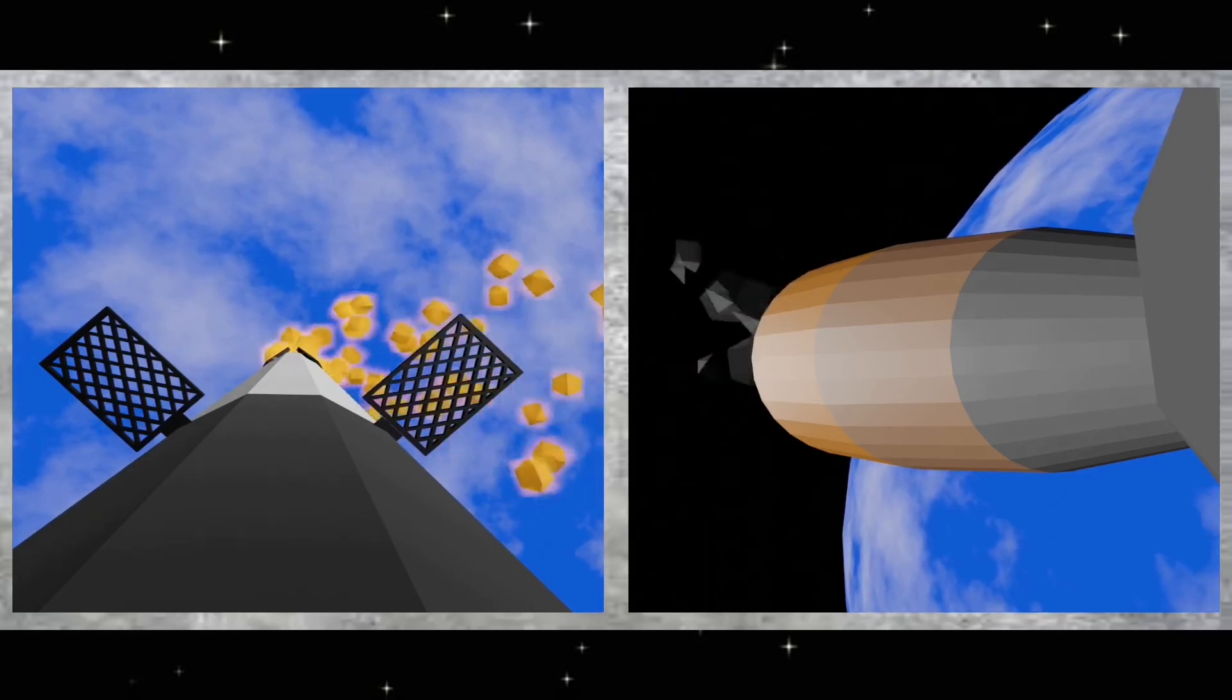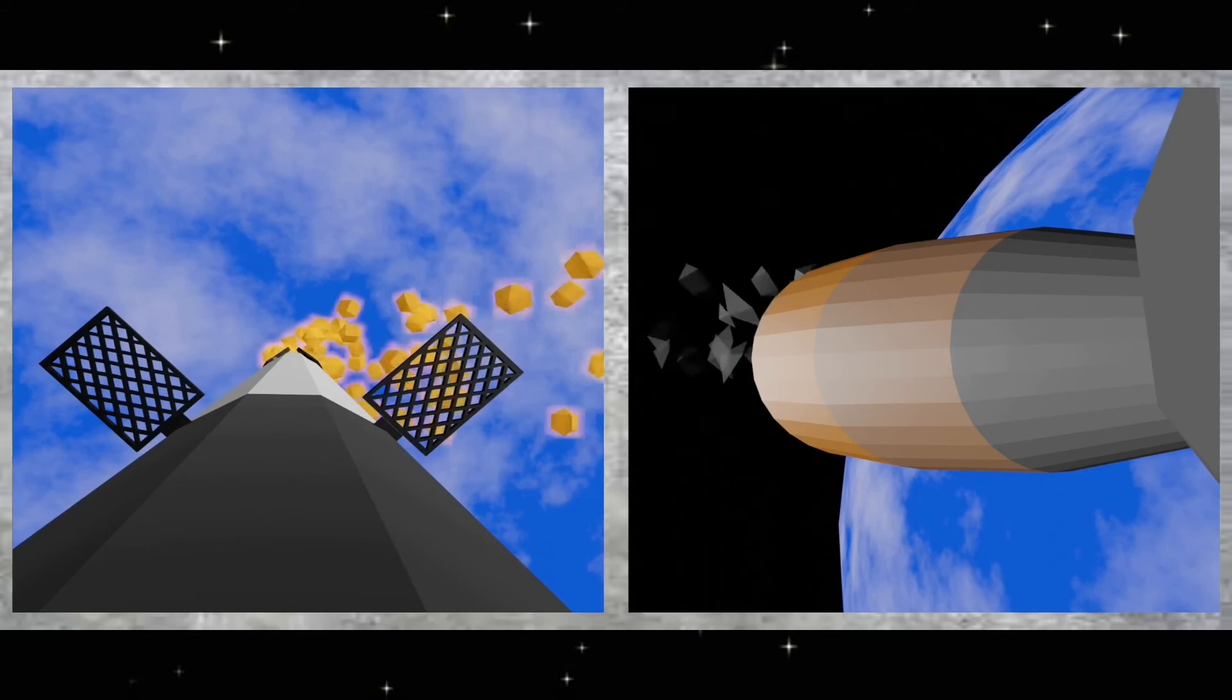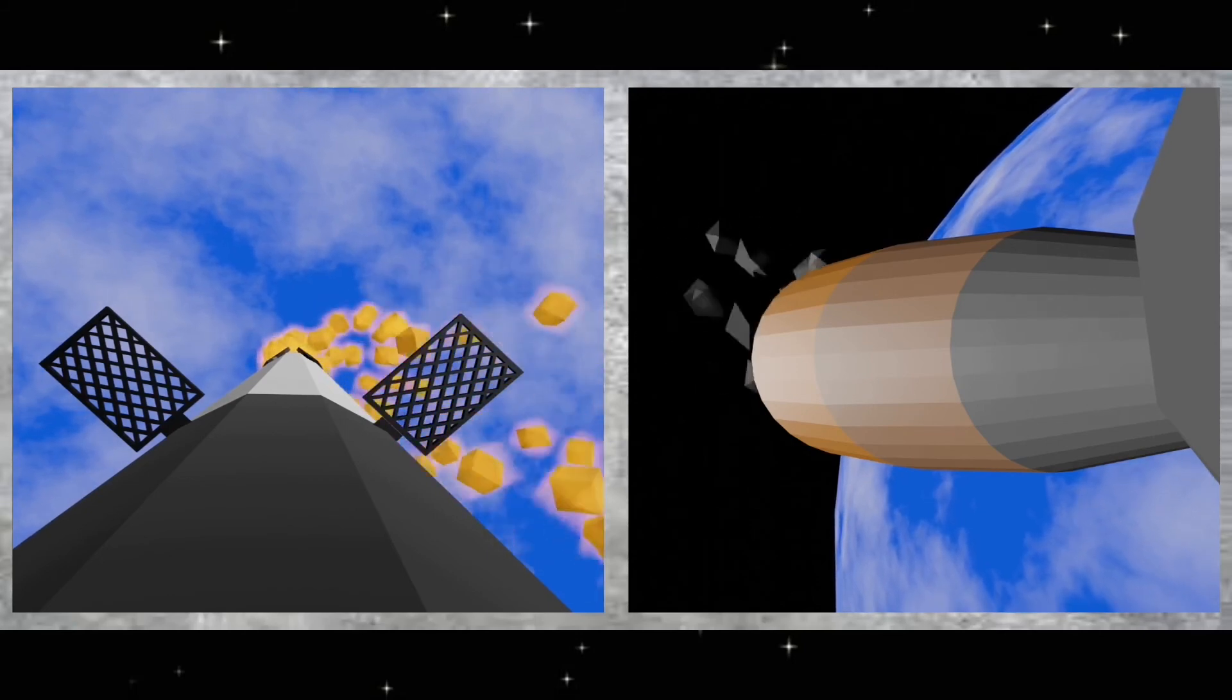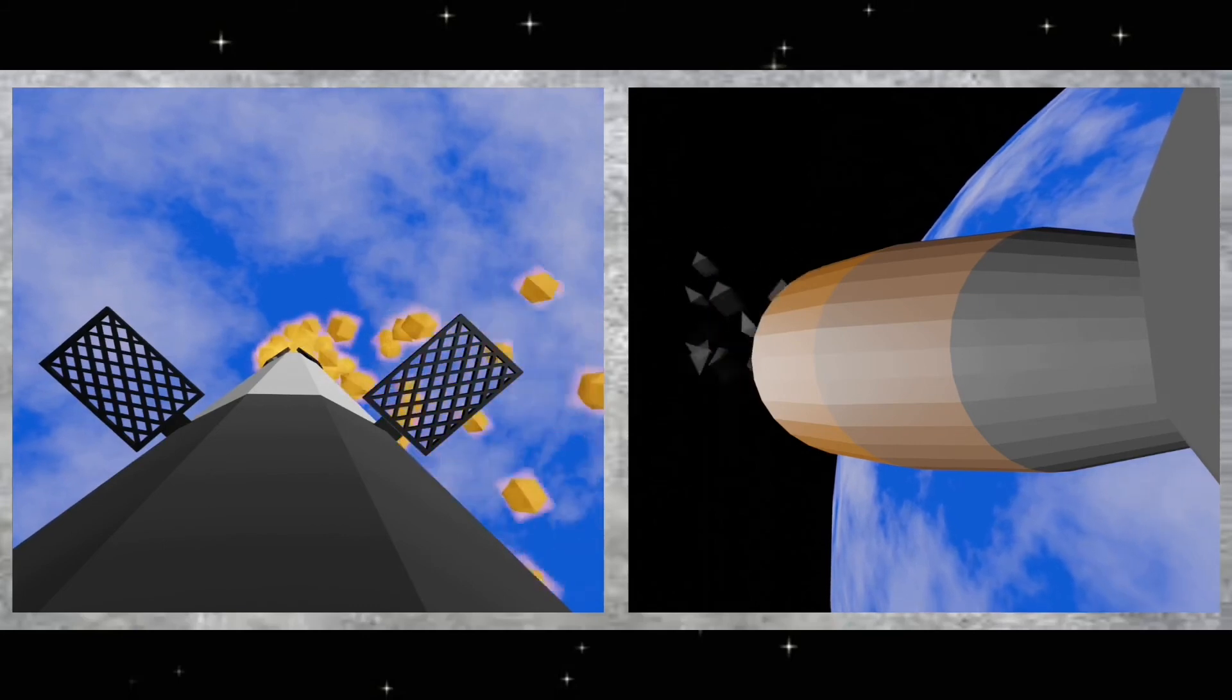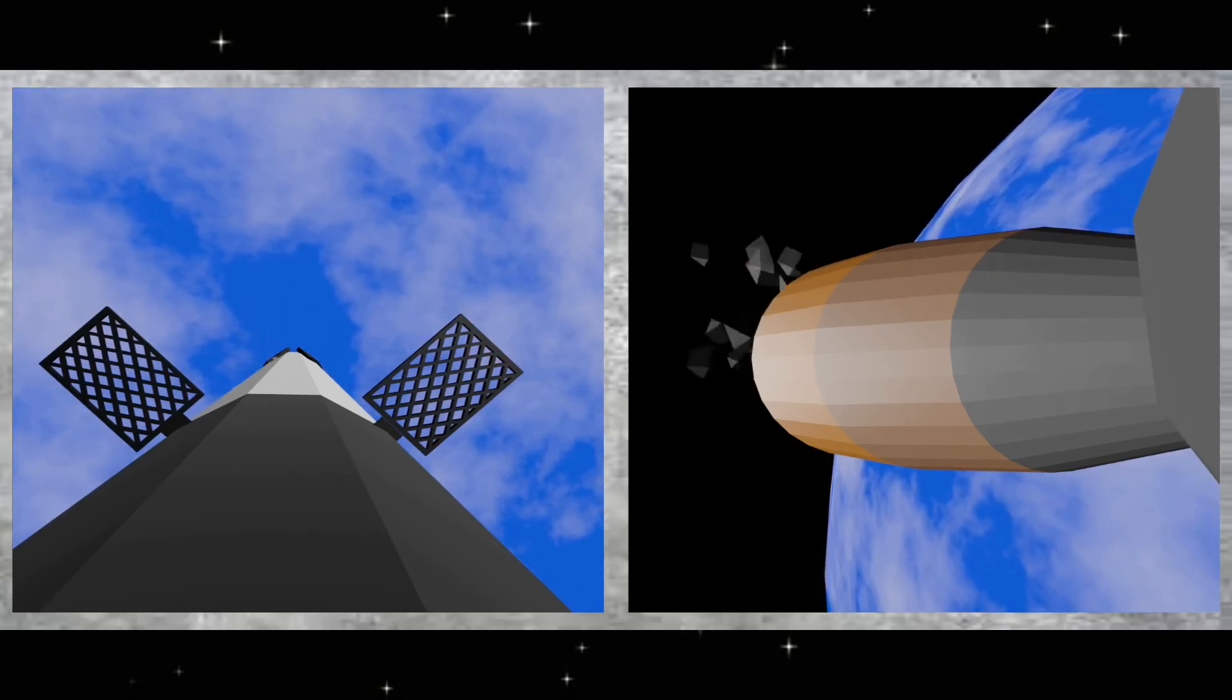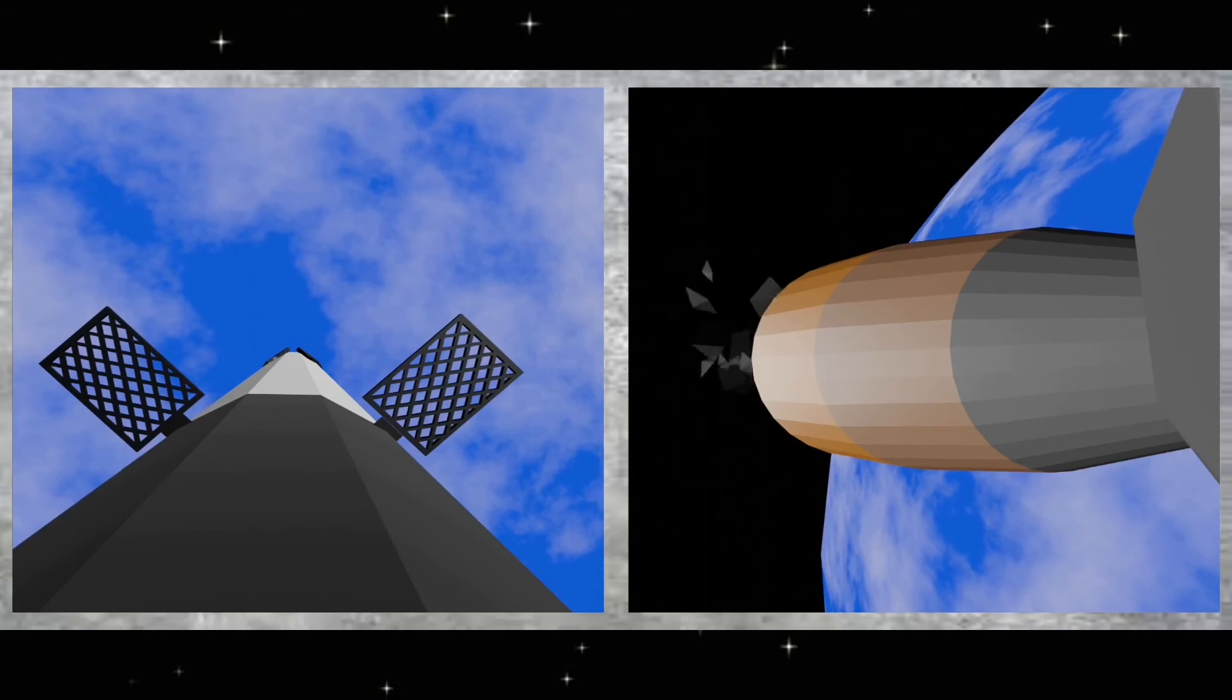Stage one entry burn startup. And there's the entry burn, three of the nine Merlin engines have relit. This burn is expected to last for about 30 seconds. Second stage in terminal guidance. Stage one entry burn shutdown. FTS is safed.